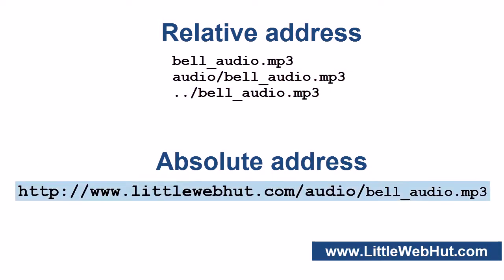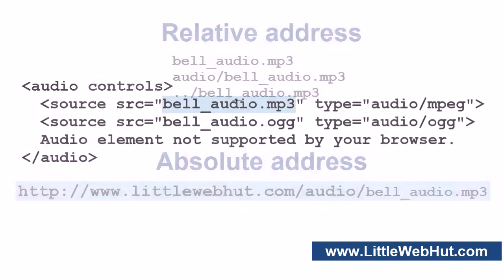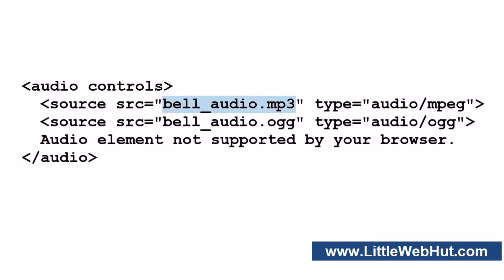Here is an example of an absolute address. An absolute address needs to start with the protocol, which is typically HTTP, followed by a colon and two forward slashes. An absolute address can point to your own website or to a different website. In this example, I'm using a relative address. I'm also using the type attribute, which is an optional attribute that can help the browser determine if it can play the audio file before it's loaded.